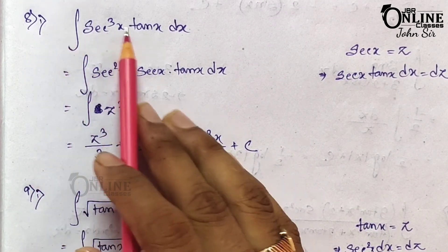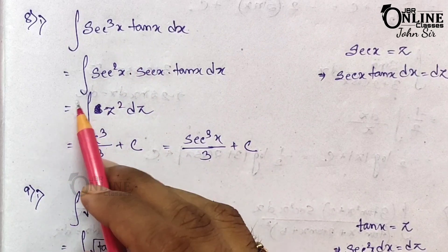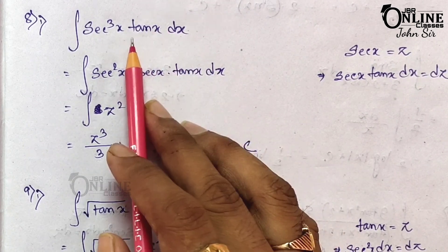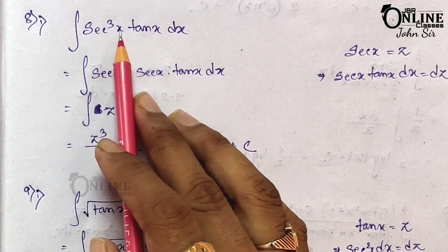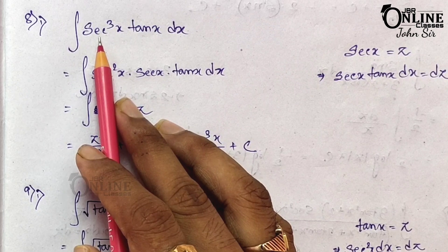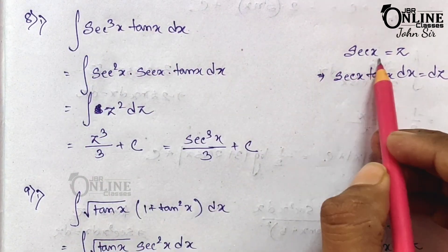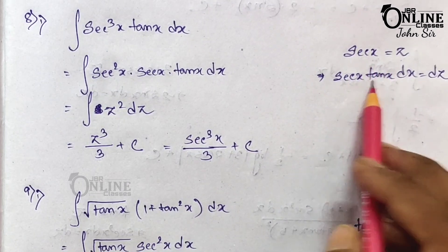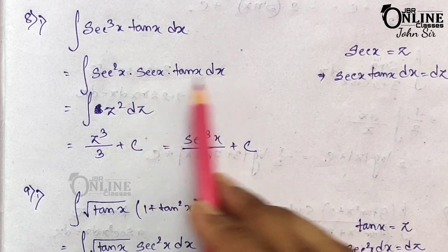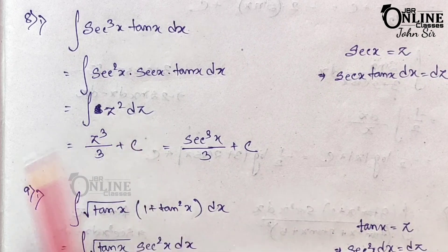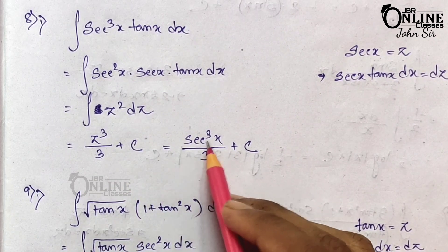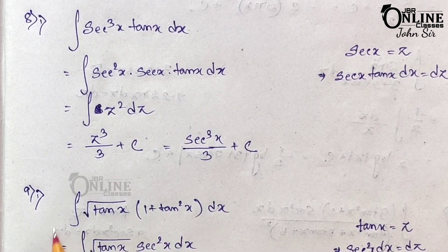Problem 8.1: ∫sec³x · tan x dx. If we let tan x = z, its derivative is sec²x, but we have sec³x — so we can't use tan. Instead, let sec x = z. Then sec x · tan x dx = dz. Writing sec³x = sec²x · sec x, we get sec²x means z², and sec x · tan x dx = dz. So the integral is ∫z² dz = z³/3 + C = sec³x/3 + C.